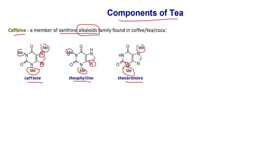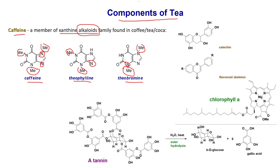Besides alkaloids, tea also contains catechin and flavonoids. Different flavors of tea have different substituents and different structures, but the key skeleton is the same. Different tea flavors have different R substituents.